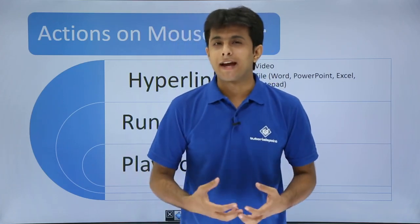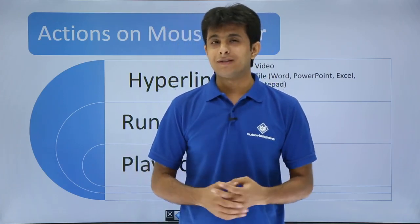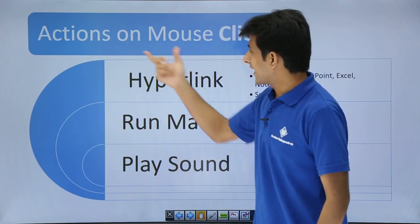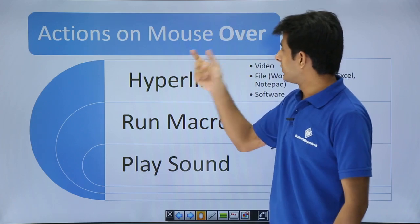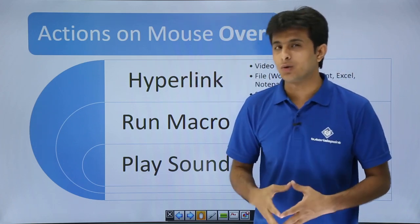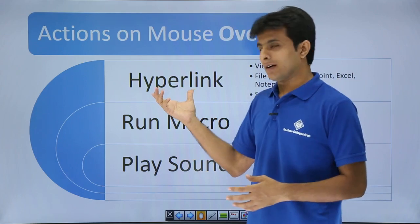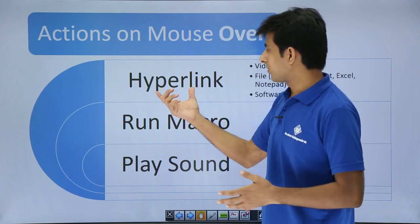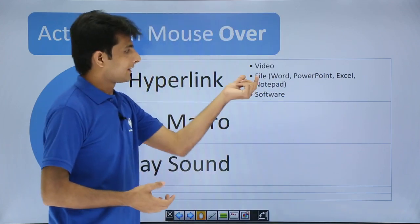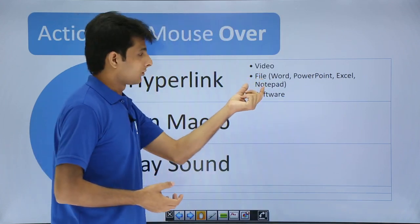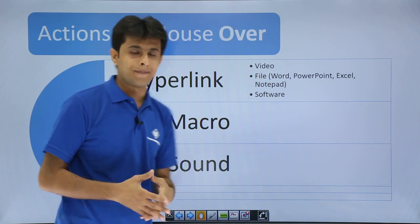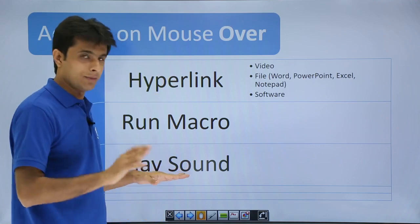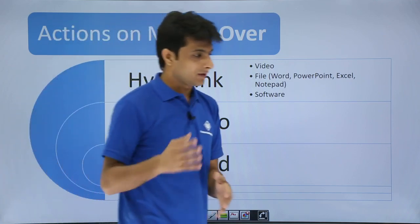In this video we'll see how to work on actions — specifically the second type, actions on mouse over. The previous video covered actions on mouse click. The same things can be done: we can put a hyperlink, jump to any file — Word, PowerPoint, Outlook, Notepad, or any software — and similarly we can run a macro or play a sound when we move the cursor over a button or image.